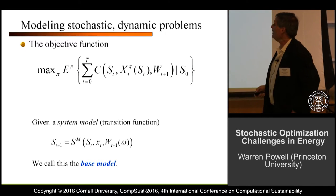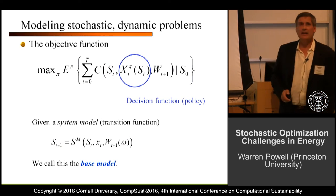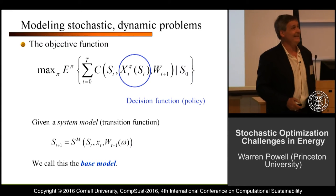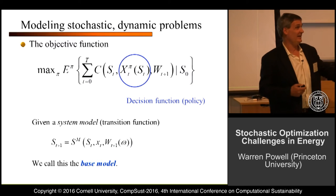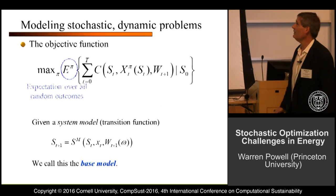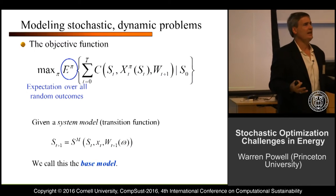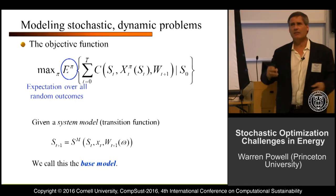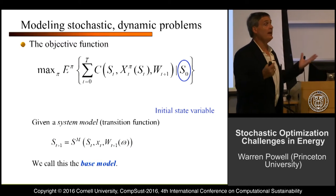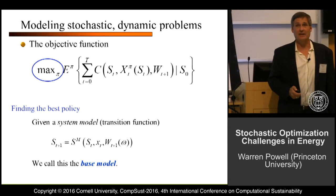It all comes down to a cost or contribution that depends on state and action, but since I don't know the state at time t I can't tell you the action directly. So I use a policy: give me the state, I'll tell you the action. We have to take an average, a risk measure, or some operator to deal with the many different sample realizations. There are problems where we have an initial state of belief — anyone who's done Bayesian modeling needs this. And now we have the problem of finding the best policy.